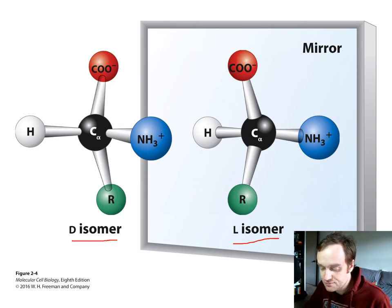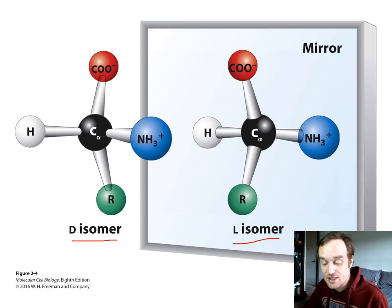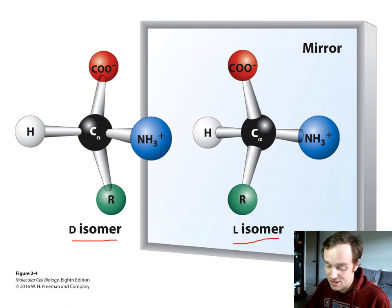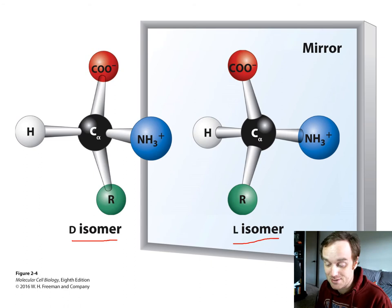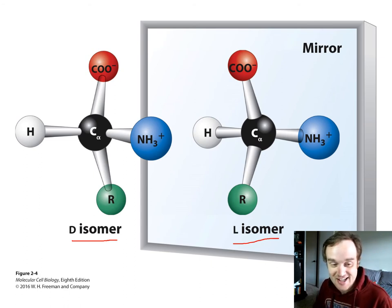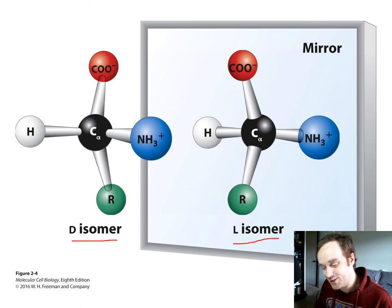For ketamine, one stereoisomer is an anesthetic used for pain relief, but the other stereoisomer of ketamine causes hallucinations. Obviously, if you're in a hospital, you don't want that stereoisomer — you want the anesthetic version of ketamine.